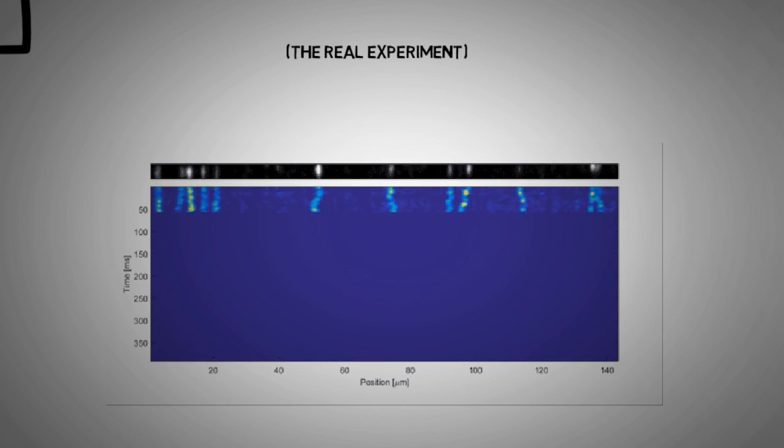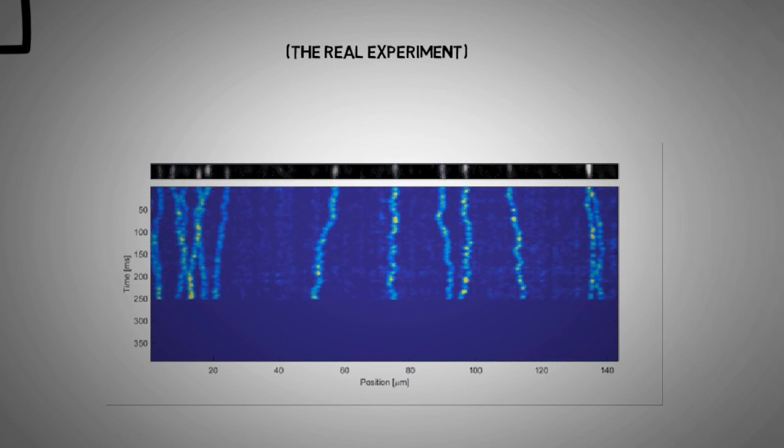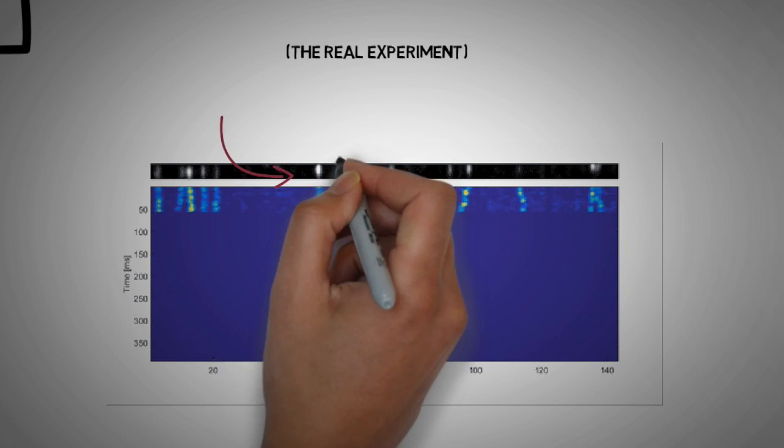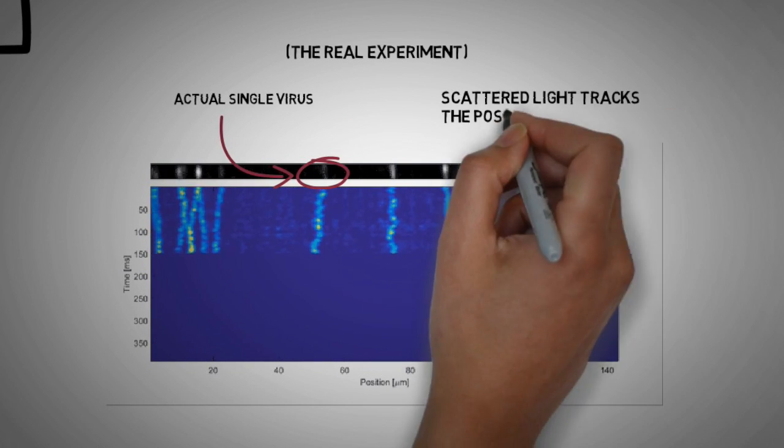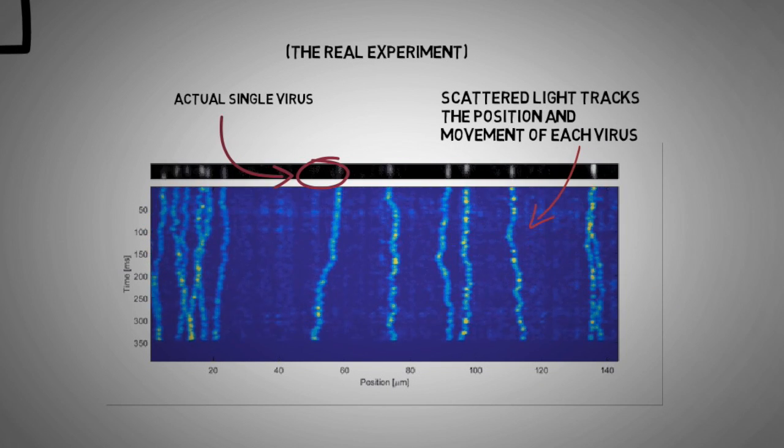Our researchers have been able to track and observe individual viruses using this system. The next step is to track single viral proteins, which scatter up to a thousand times less light than a single virus.